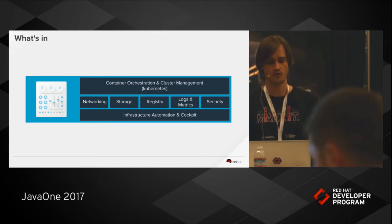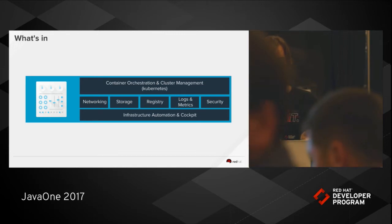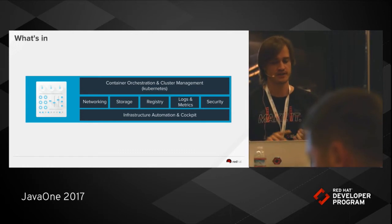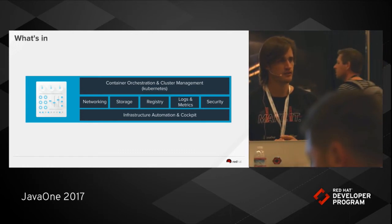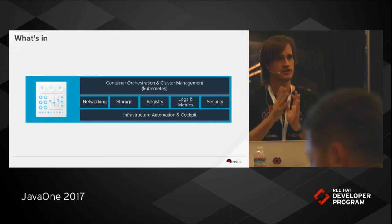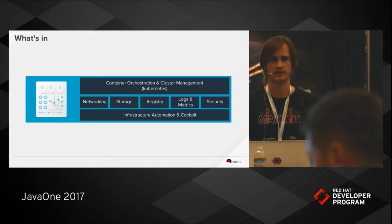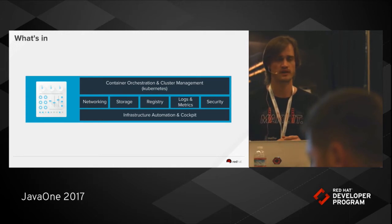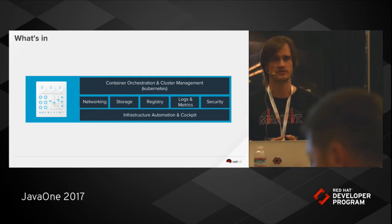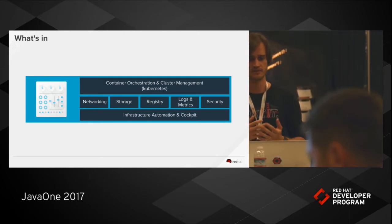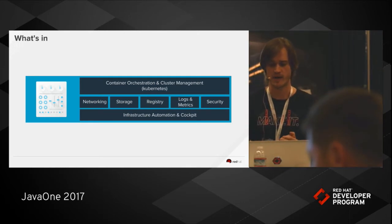The technology that does this in OpenShift is Kubernetes. It controls networking and storage, includes a container registry, logging, and metrics as well. Security is a cross-cutting concern on the platform — we see security from the moment you run your container process to the moment you have it exposed to the outside via something like an API management solution.